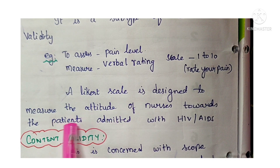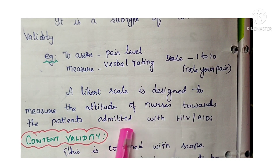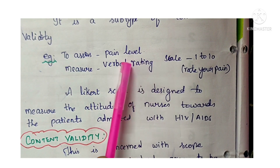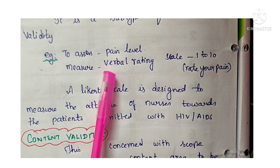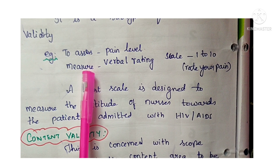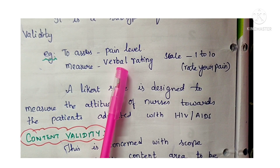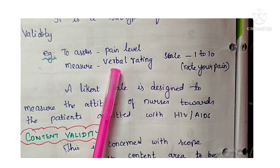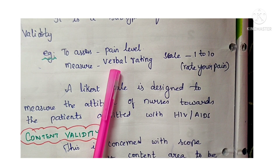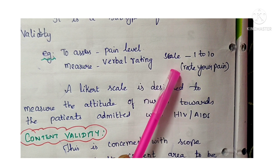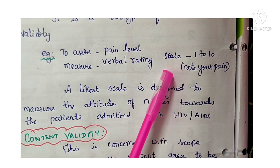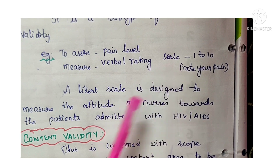A Likert scale designed to measure the attitude of nurses towards patients admitted with HIV/AIDS is one example of face validity. One more example: if you want to assess pain level, the instrument you take — a verbal rating scale from 1 to 10 — you can ask the patient to rate the pain they experience. Note that a questionnaire can also be an instrument for measurement, not only physical apparatus.